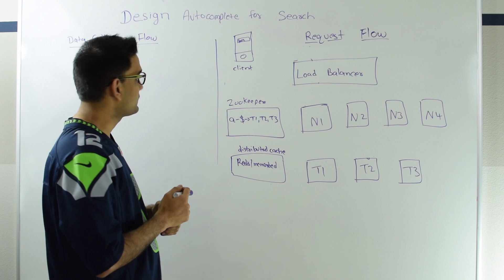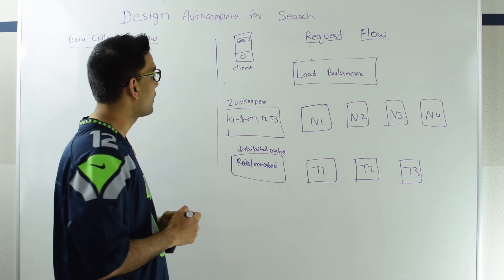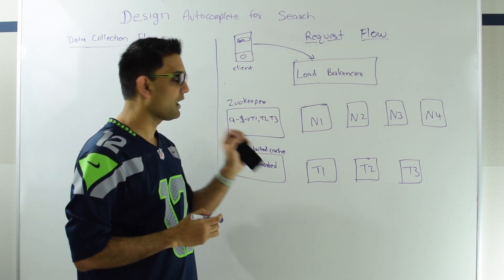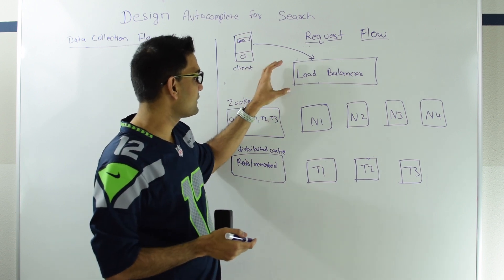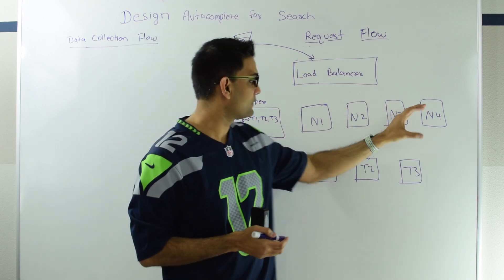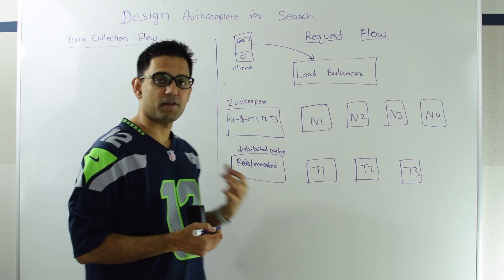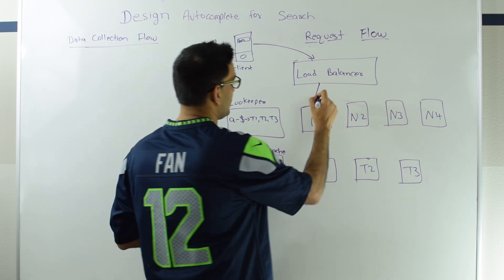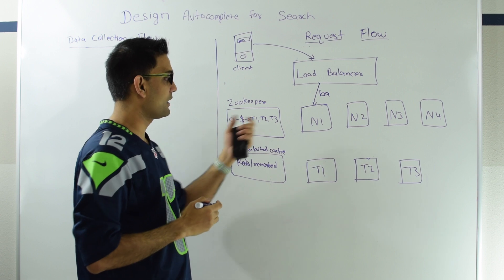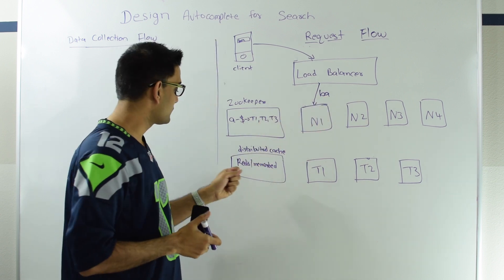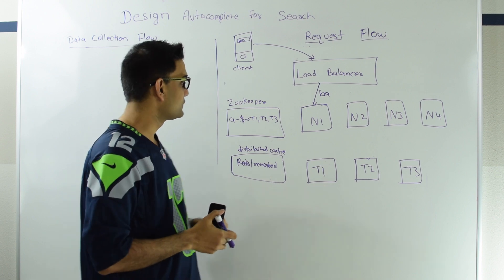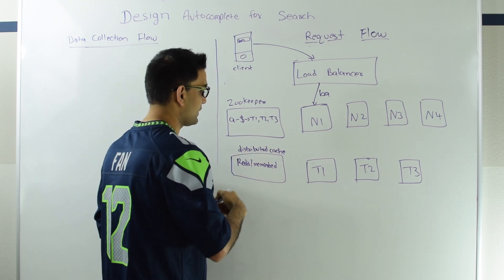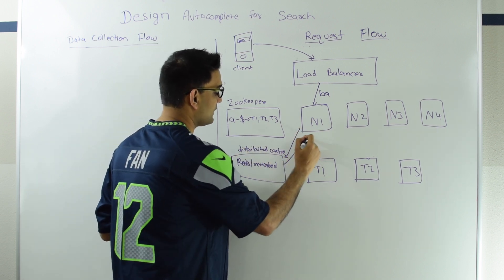Let's see what happens when a request comes in. Let's say client types BA on the search bar. The request goes to the load balancer, which will delegate the request to one of the nodes N1 to N4 based on round robin mechanism. Let's say the request lands at N1. So N1 gets BA and needs to find the autocomplete terms for BA. First, N1 looks into the distributed cache to see if we already have data for BA. Let's suppose we do not have the data for BA in the cache, so he gets nothing back.